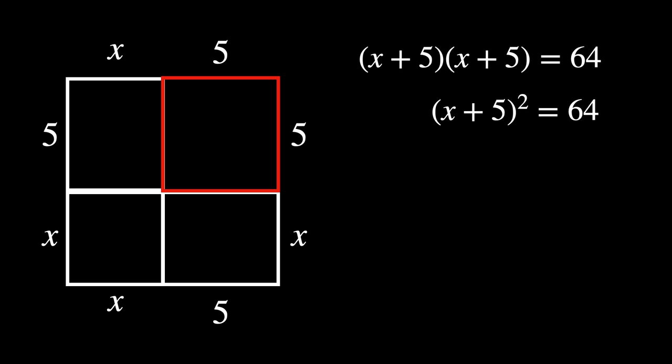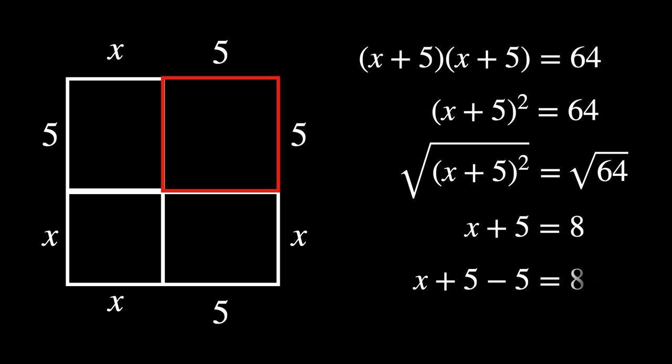Let's use the balance technique founded by Al-Khwarizmi to take the square root of both sides. We then get x plus 5 equals 8. And to balance it even further, we subtract by 5 from both sides. There you have it, x is equal to 3.